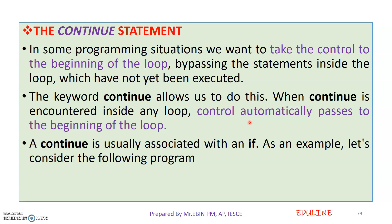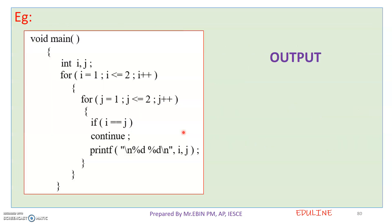The control passes to the beginning of the loop automatically. Let's take a look at another example. If we want to use the nested for loop — that is, if we want to execute a loop inside a loop — let's take a look at another example.